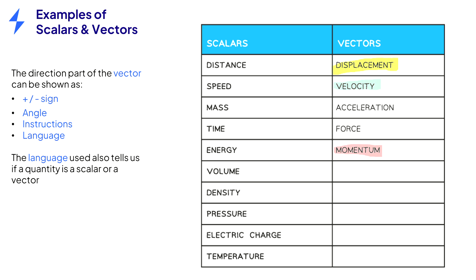How do you know that momentum is a vector? Well, the equation for momentum is momentum equals mass times velocity. Mass is a scalar and velocity is a vector, so momentum must also be a vector.